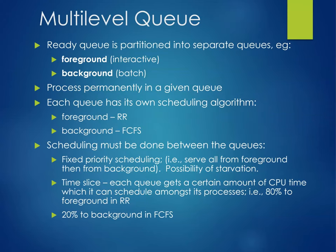You could also use multi-level queues. A ready queue is partitioned into separate queues — foreground and background processes. The process is permanently in a given queue, and each queue has its own scheduling algorithm. The foreground could be round robin; the background could be first come, first serve. Scheduling must be done between the queues. Fixed priority scheduling — serve all from the foreground, then from the background — introduces the possibility of starvation. With time slicing, each queue gets a certain amount of CPU time: 80% to foreground in round robin and 20% to background in first come, first serve.